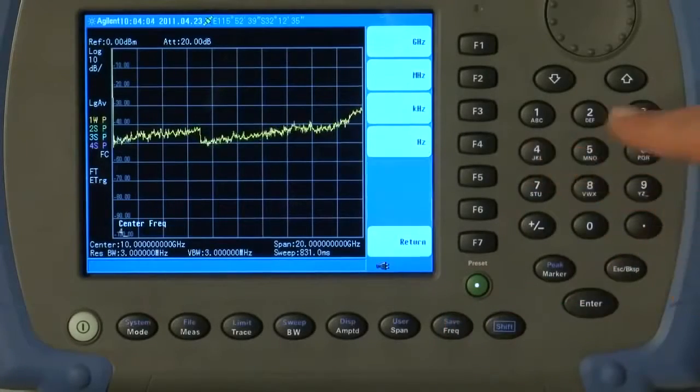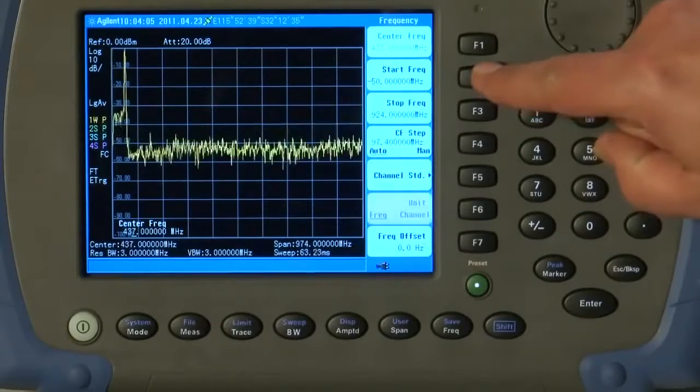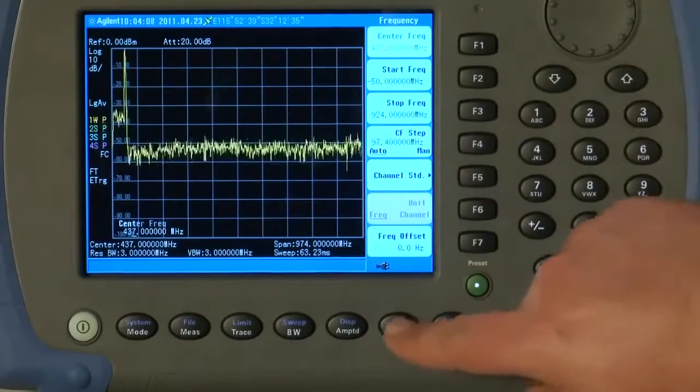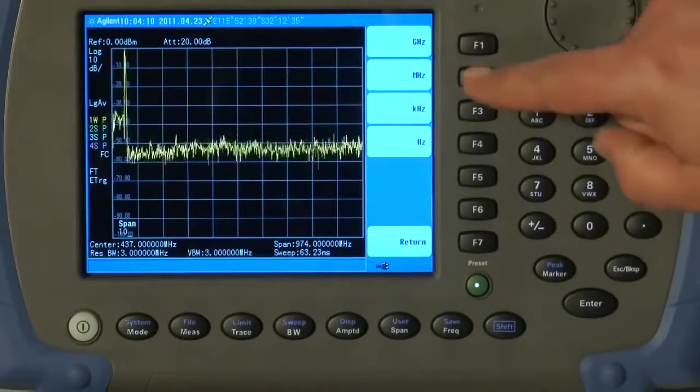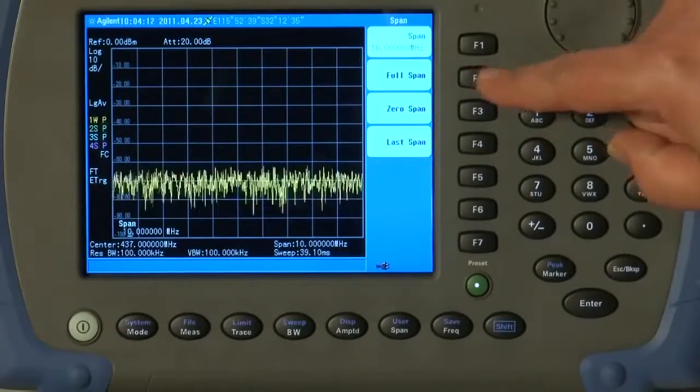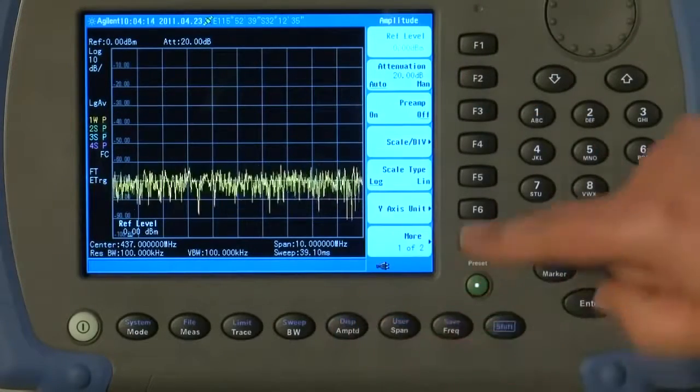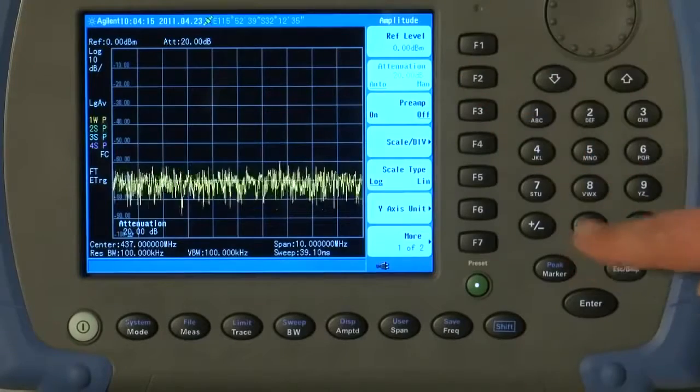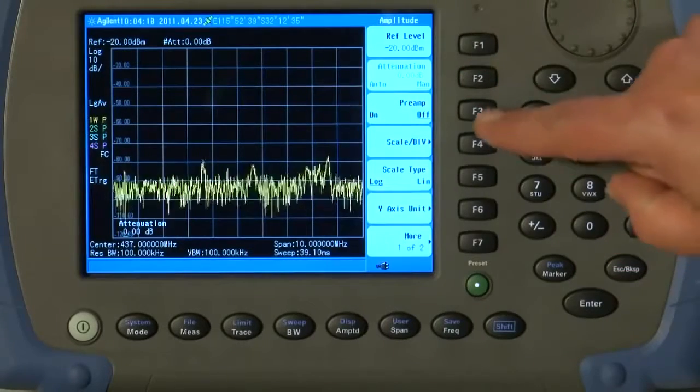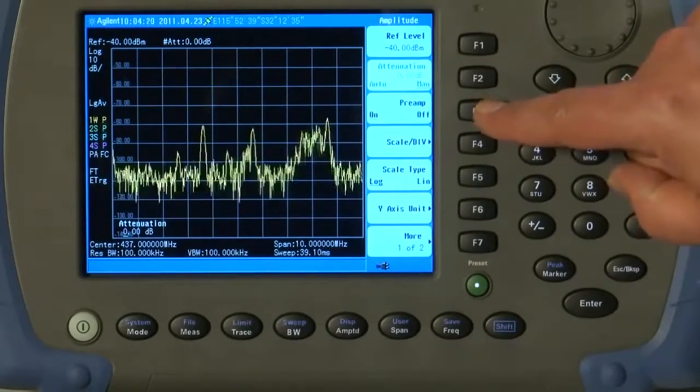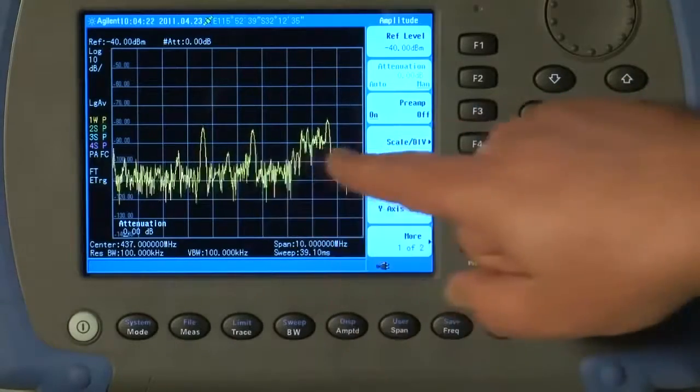So, let us start by looking for some weak signals in the 430 meg ISM band. I will press Frequency and enter a frequency of 437 MHz and a span of, say, 10 MHz. And to increase the sensitivity, I will press the Amplitude button, reduce the attenuation to 0 dB, I will turn the preamplifier on. And you can see now, we have a range of signals here being picked up by this antenna.